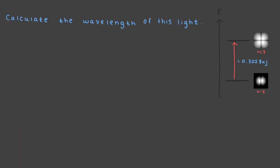Calculate the wavelength of this light. Now that we have calculated the energy of the light, we can use this to solve for the wavelength. Recall that the relationship between the energy of the light and the wavelength is given by this equation.